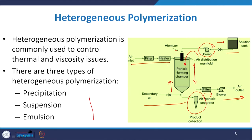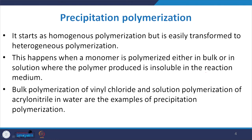Let us begin with precipitation polymerization. It starts as a homogeneous polymerization process but is easily transformed into a heterogeneous polymerization step, forming heterogeneous polymer particles over the period of time. This happens when a monomer is polymerized either in bulk or in solution where the polymer produced is insoluble in the reaction media. The selection of reaction media is therefore very important. The bulk polymerization of vinyl chloride and the solution polymerization of acrylonitrile in water are best examples of precipitation polymerization.